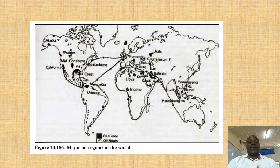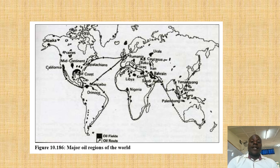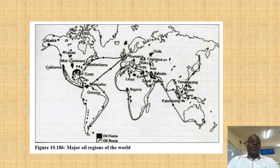Check on this map — it's a world map showing oil fields and oil routes. You will check in Africa and see countries like Libya, Nigeria, and Algeria. You will also find major oil regions in Asia, Europe, South America, and Australia.